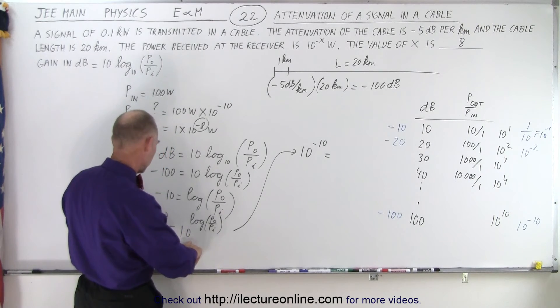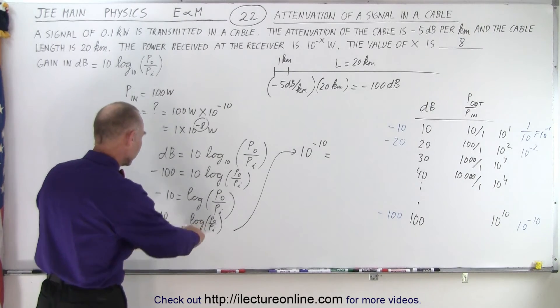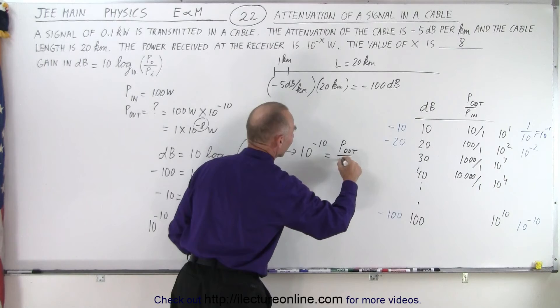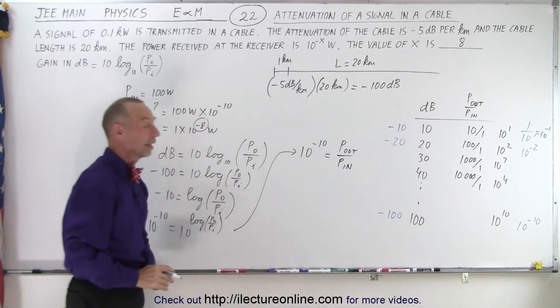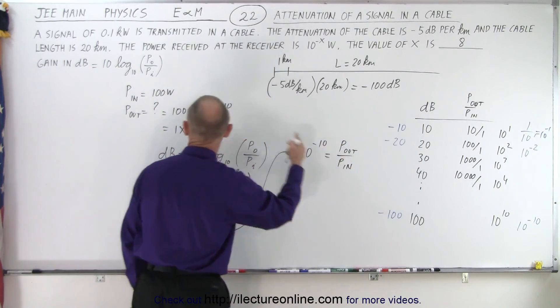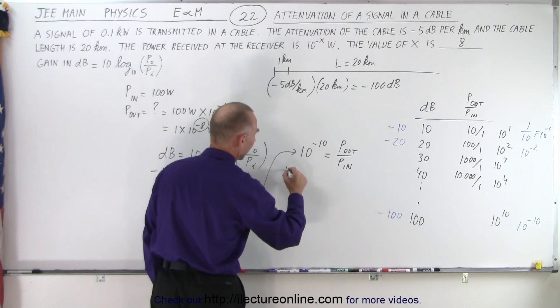Of course 10 raised to the log, that negates, which means that we end up with on the left side 10^(-10) equals - those two negate - we end up with that equals P_out over P_in. And so now we realize that the ratio of P_out to P_in is 10^(-10).